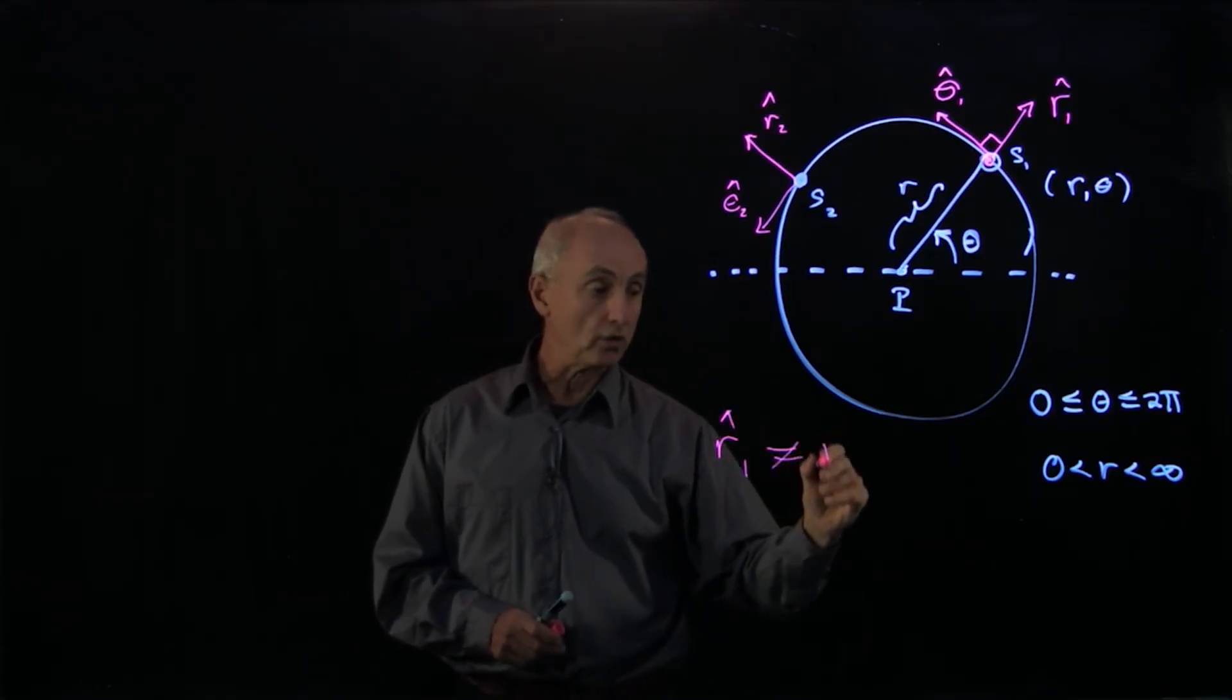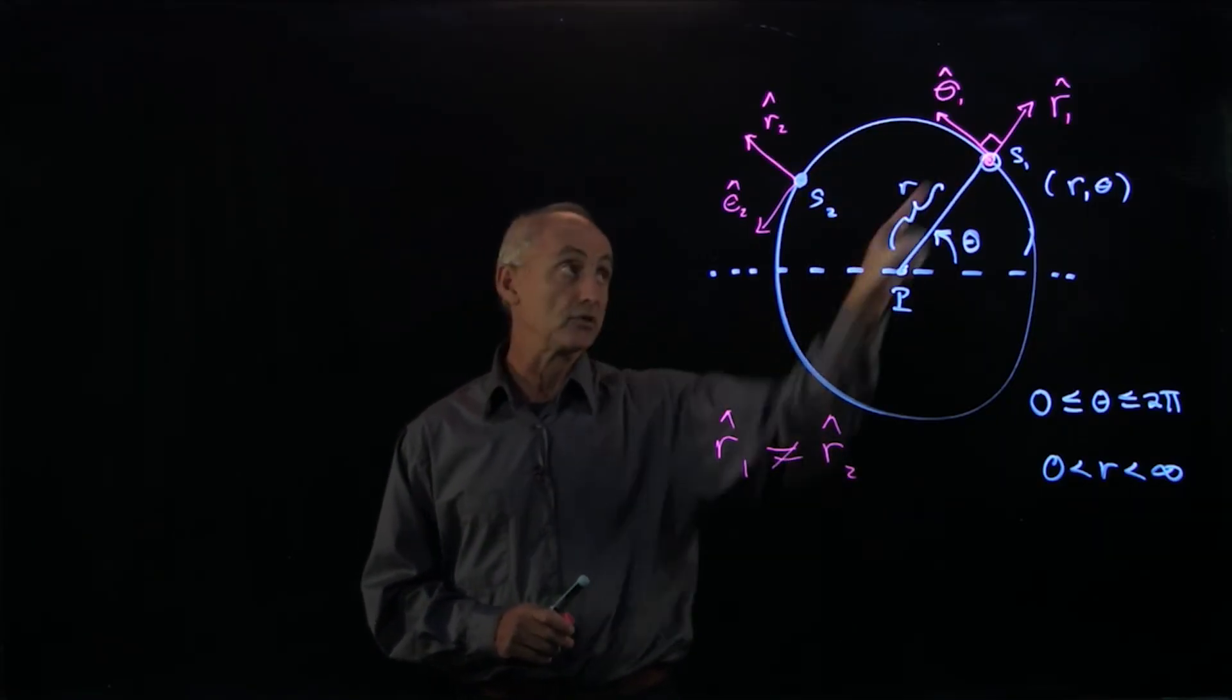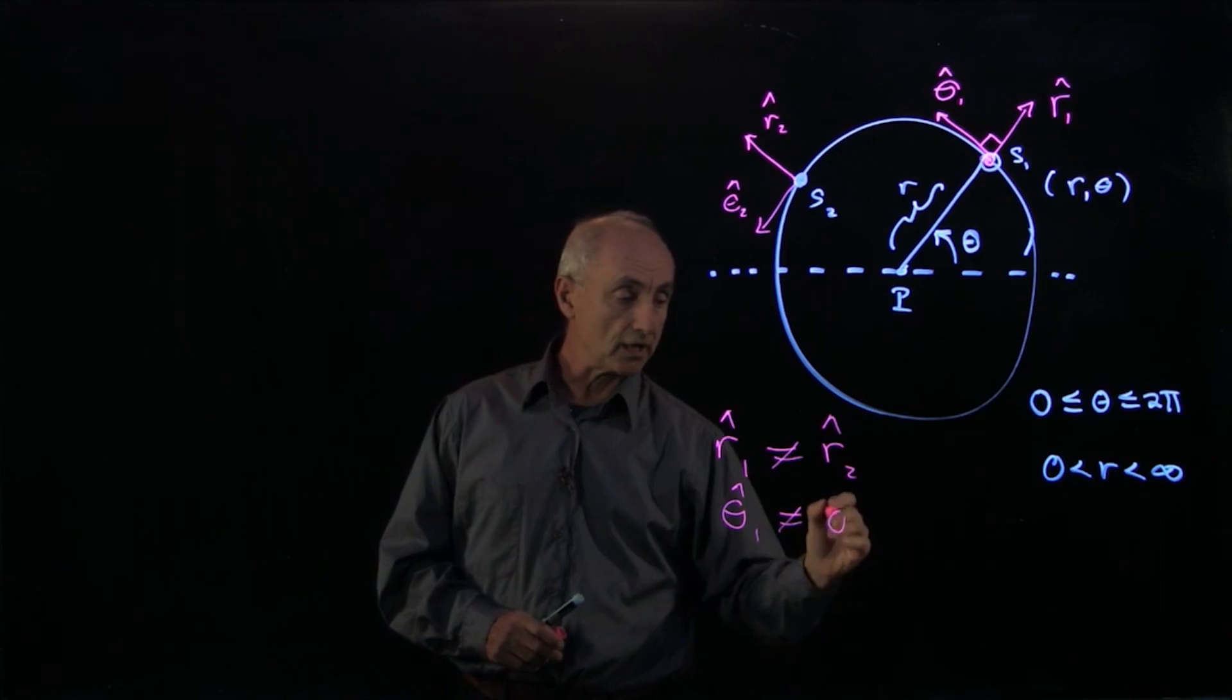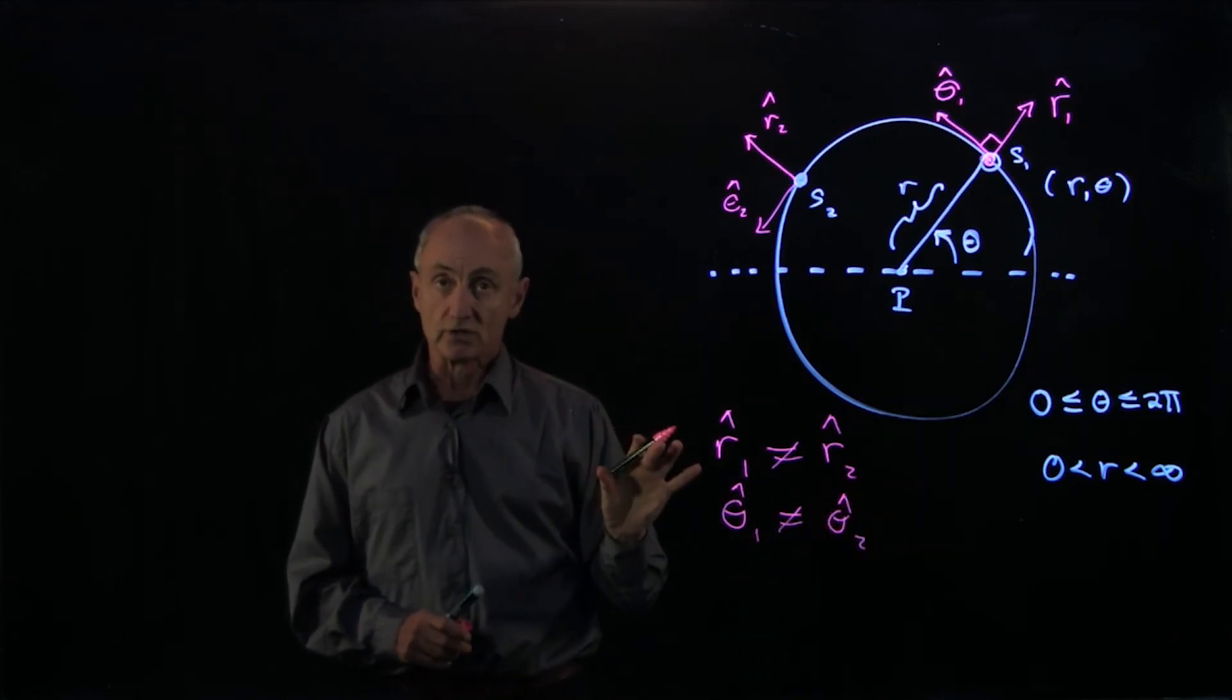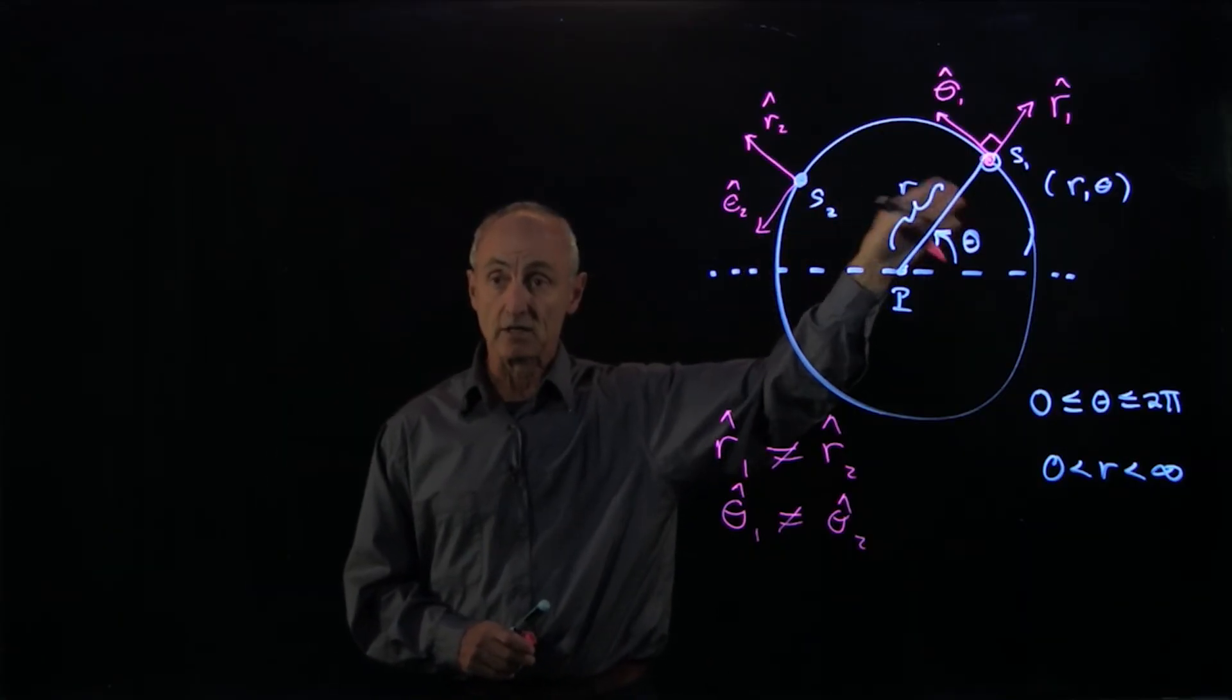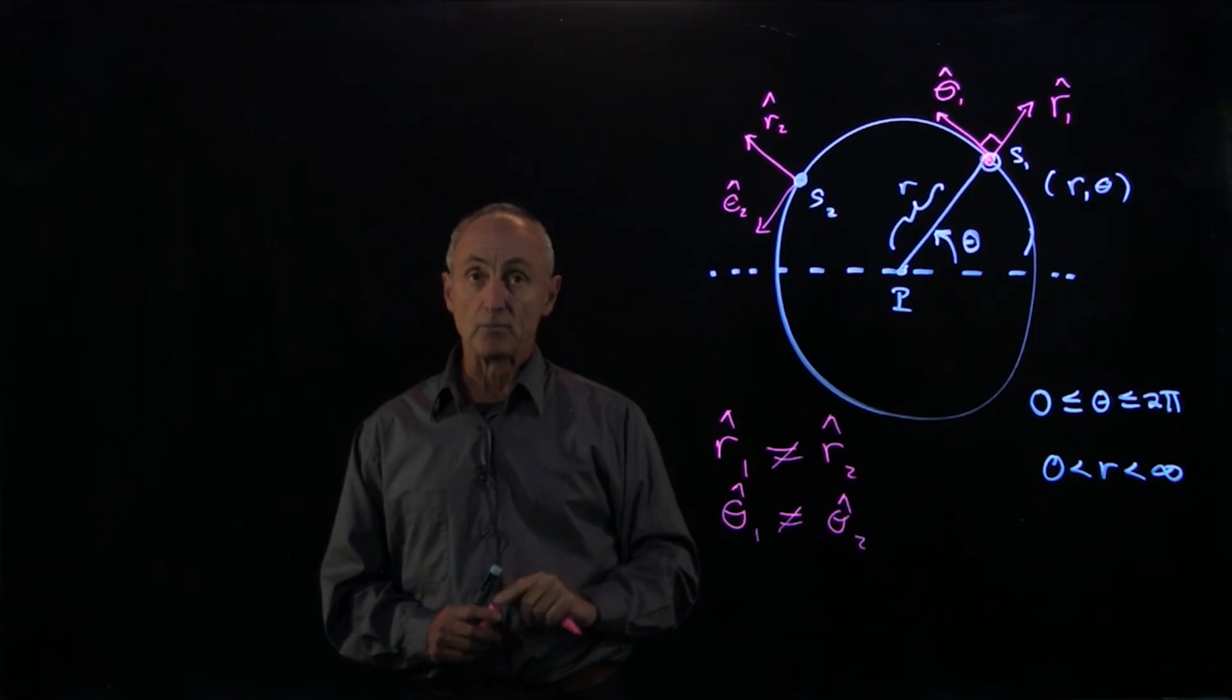What we see is that r hat 1 is not equal to r hat 2. They both are unit vectors with the same magnitude, but they point in opposite directions. In the same way, theta hat 1 is not equal to theta hat 2. Unlike Cartesian coordinates, where every point has the same unit vectors, in polar coordinates the unit vectors depend on where you are in space. That will make our analysis in polar coordinates a little bit more complicated.